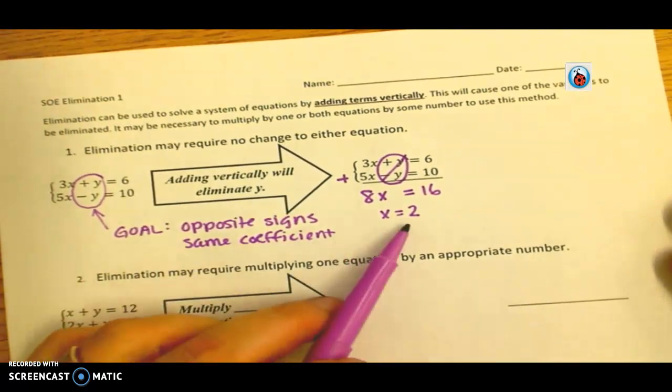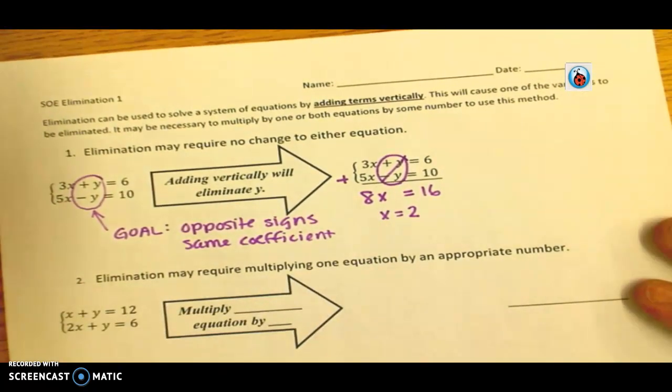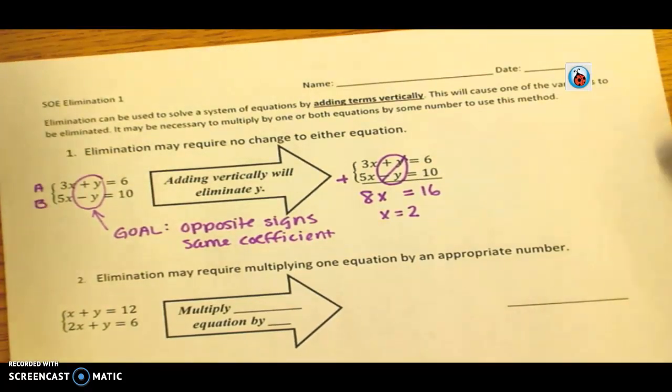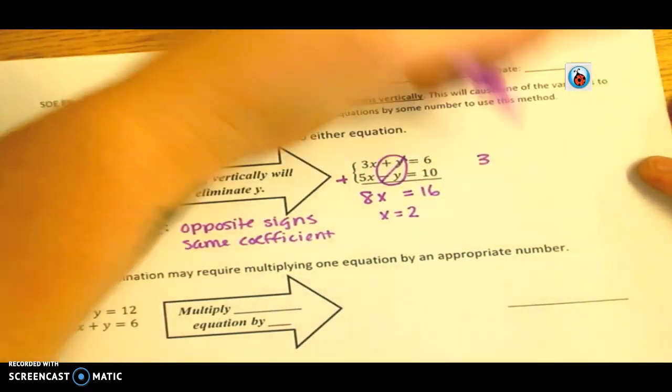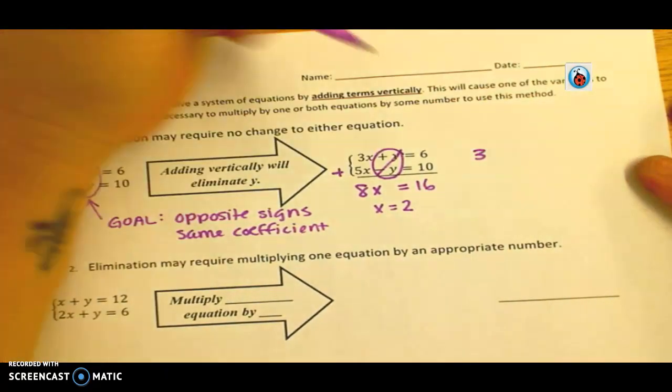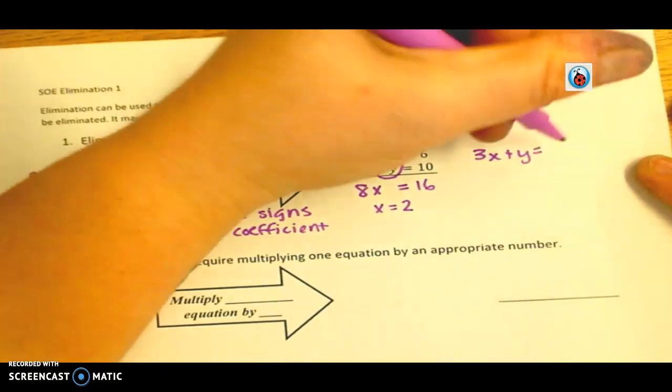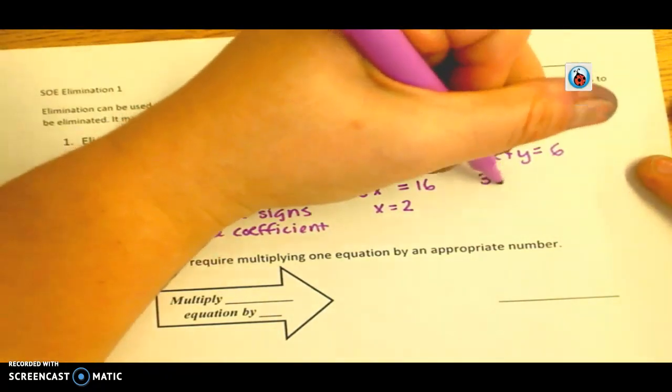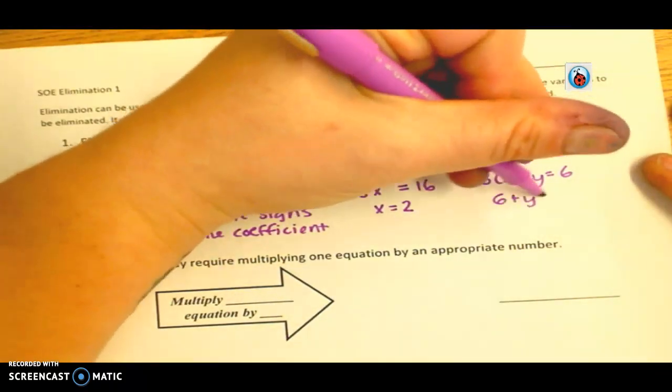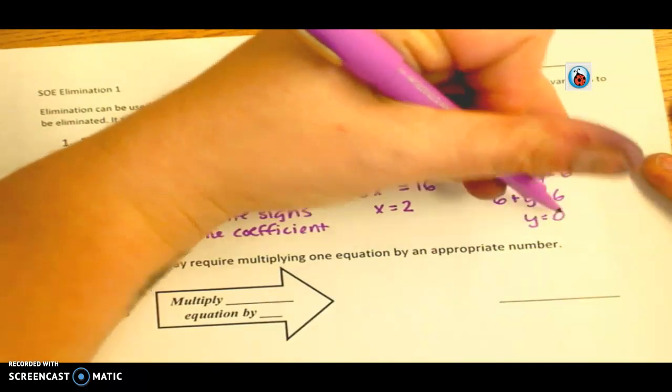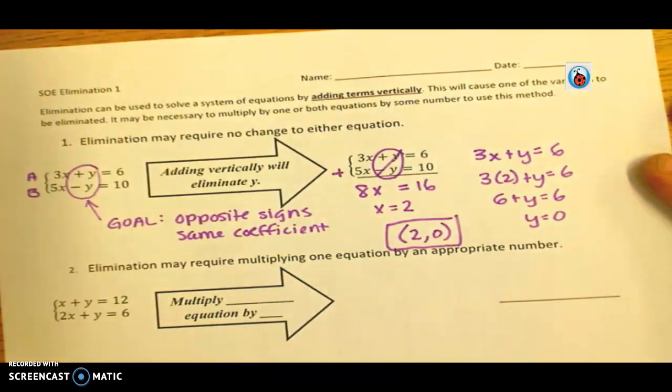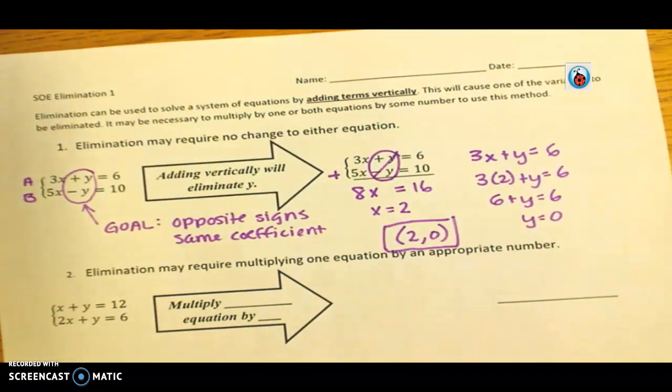So much easier than having to rearrange and substitute. So now I got x equals 2. Boom, done. Alright? So now that I have my x value, I would plug it back into one of the equations, equation a or b, to find the y value. Let's just do that real quick. From here on out though, you should be able to do that. So we got 3x plus y equals 6. So 3 times 2 plus y equals 6. 6 plus what gives you 6? And that would be 0. So the solution is 2, 0. Okay? Alright, so again, always just plug that back in to go find your new one.